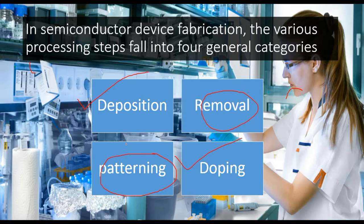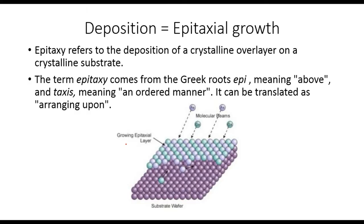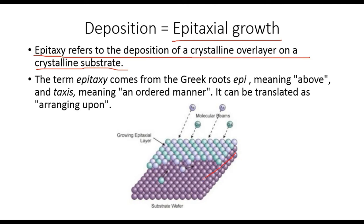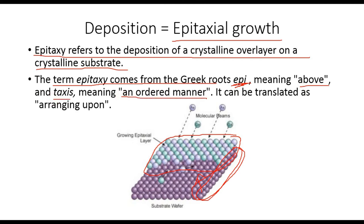Now we will study epitaxial layer growth in detail. Epitaxy refers to deposition of a crystalline overlayer on a crystalline substrate. This wafer, created in the last lecture, is represented in purple, while the colorful dots are the epitaxial layers grown on this substrate. The term epitaxy comes from Greek roots: 'epi' means above, and 'taxis' means in an ordered manner — so epitaxial growth means growing above a substrate in an ordered, sophisticated manner.